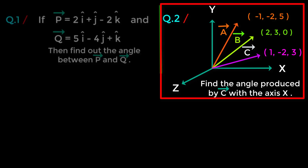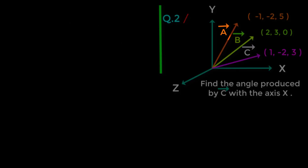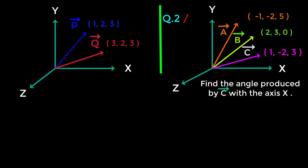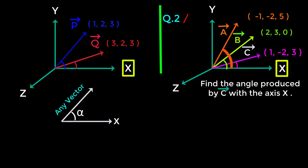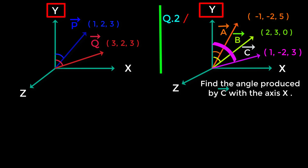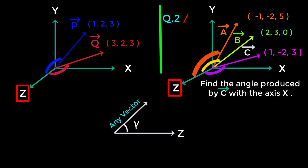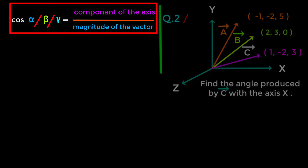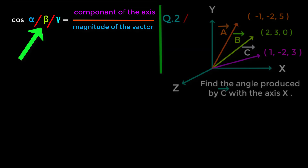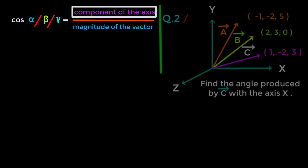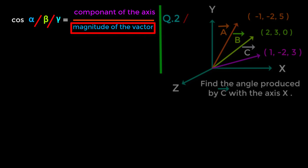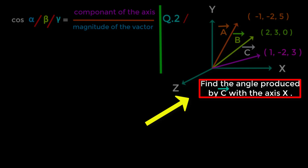Now we will solve the second problem using the direction cosine formula. If we have any vector and we are asked to find its angle with the x-axis, y-axis, or z-axis, the angle names are: alpha for x-axis, beta for y-axis, and gamma for z-axis. The format of the direction cosine formula is: cos alpha (or beta or gamma) equals the component along that axis divided by the magnitude of the vector.